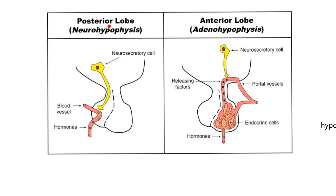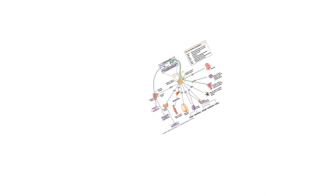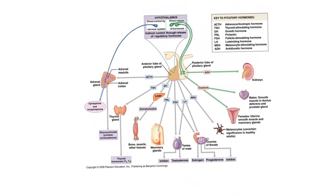In contrast, the posterior lobe is called the neurohypophysis because it is completely neural tissue. The neuro-secretory cell has a longer axon that goes all the way down to the posterior lobe and releases its hormone from the end of the axon directly into a blood vessel, as shown here with the laser pointer. Those hormones — you might call them neural hormones — travel through the systemic circulation to their target tissue.